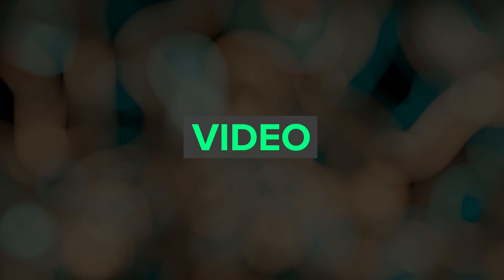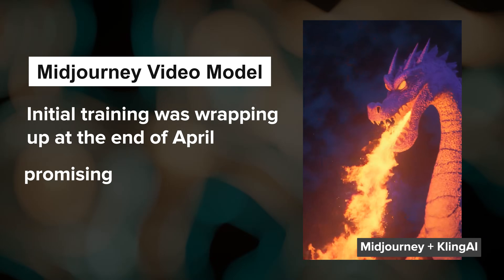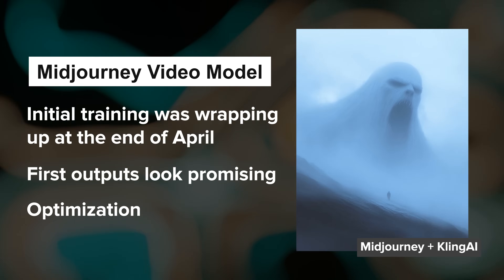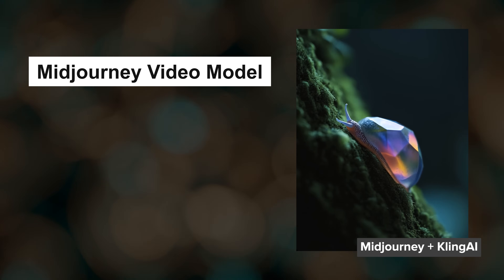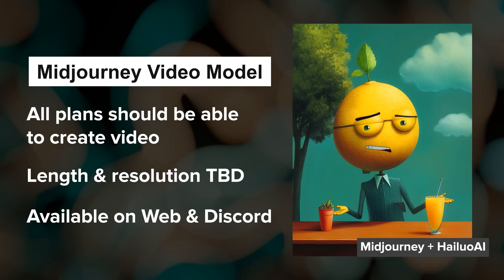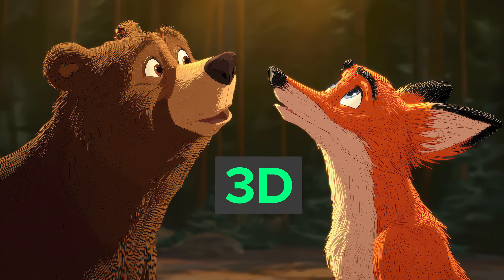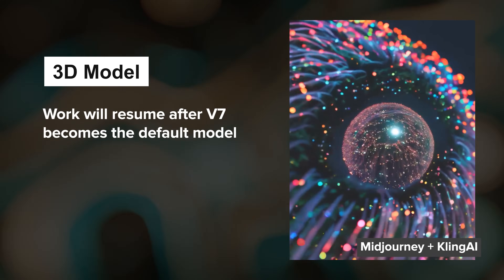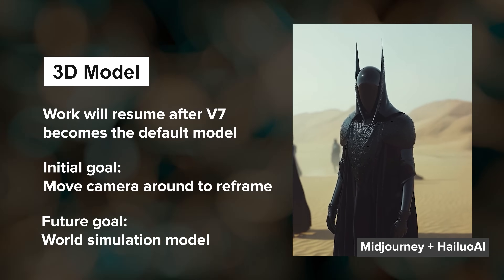In other news, Midjourney is making progress on their video model. The first training runs were completing at the end of April and they've said the initial outputs look promising. The model will go through several weeks of optimization and if we're lucky we might get a first look at it in May or June. Midjourney's goal is to make video accessible and affordable for all subscription plans. They're working to strike a balance between cost and quality but also want that Midjourney magic layered on top. As for 3D development, they'll resume work on this after V7 leaves its alpha state and becomes the default model. Their initial goal for 3D is to let users move the camera around to reframe images from different angles.